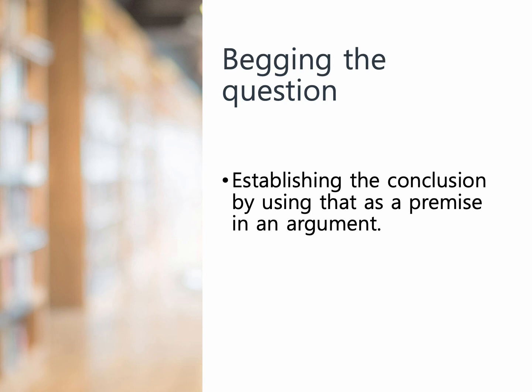The begging the question fallacy states: you're trying to establish the conclusion by using the conclusion as a premise in an argument — you beg the question. Another word for this is circular argument. When you argue for a conclusion but instead of providing independent evidence, you restate the conclusion as a premise, you have committed the fallacy of begging the question.